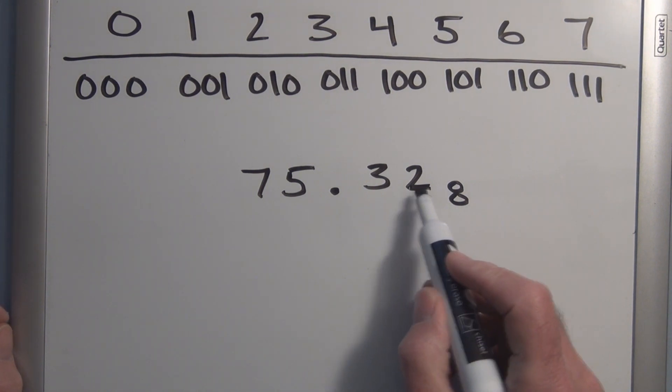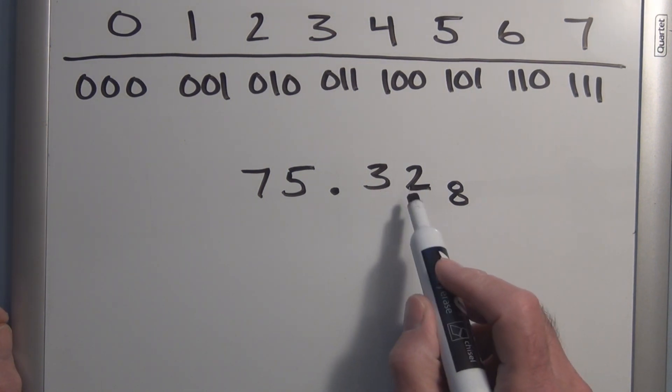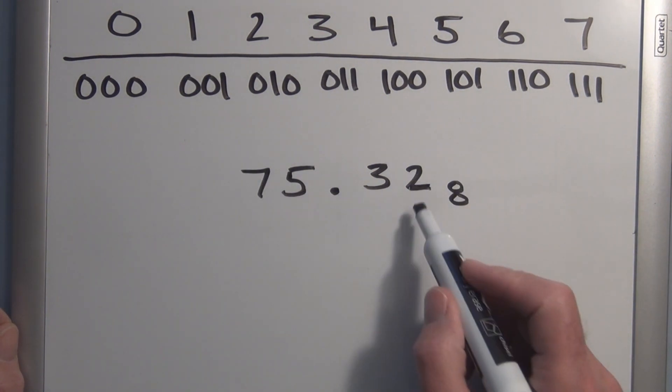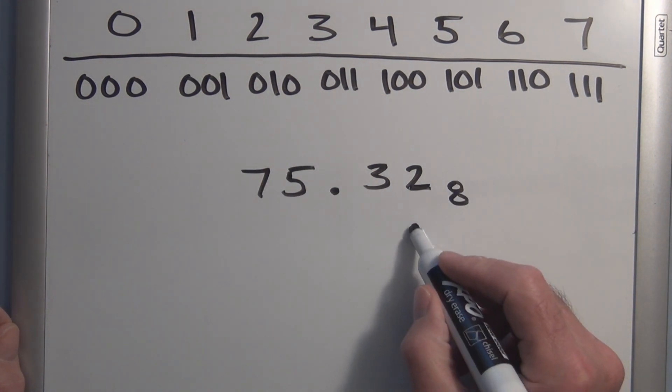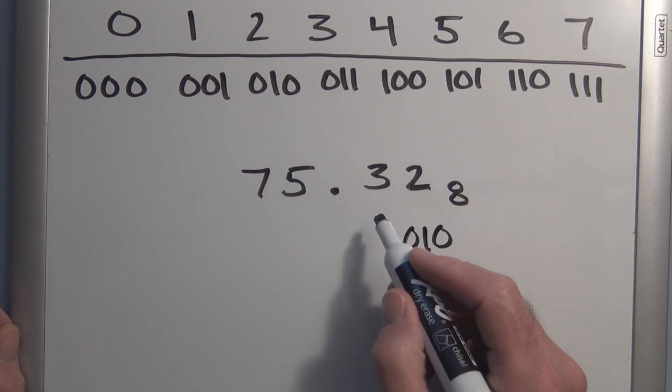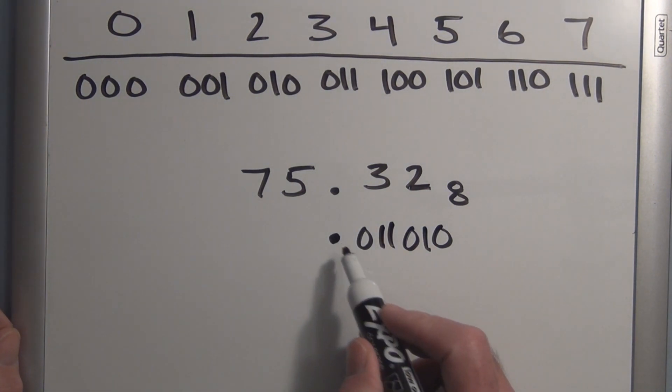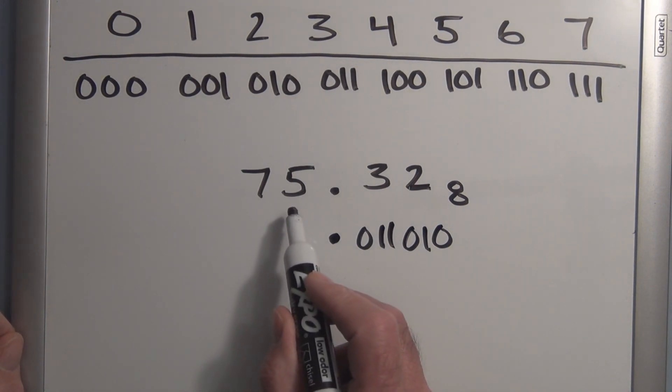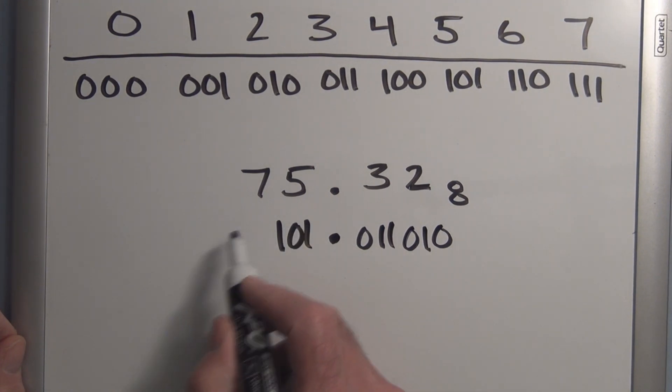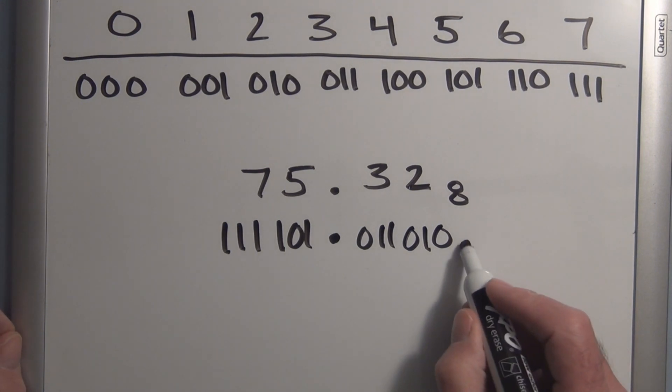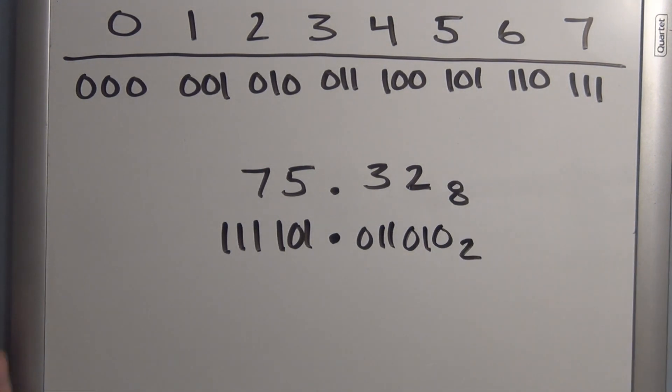Just take each digit and convert it to its equivalent 3-bit binary number. So for 2, we have 010, for 3, 011. Now we have a binary point here, and we have 5, which is 101, and 7, which is 111. So that's the equivalent binary number to octal.